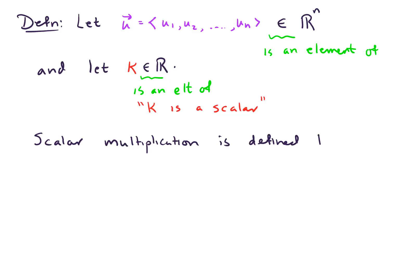Scalar multiplication is defined by the following: we have k times our vector u, and what that equals is k times component u1, the scalar k times component u2, and so forth, all the way up through the nth component. And that's what we mean by scalar multiplication.